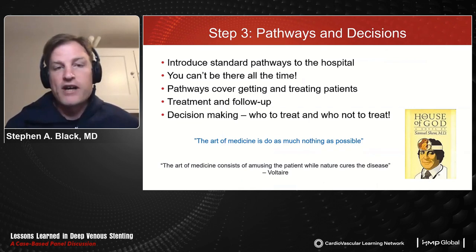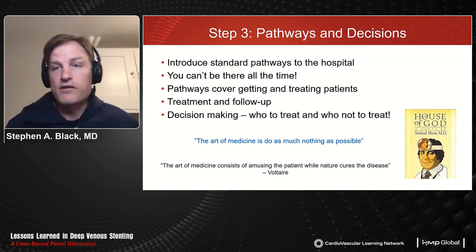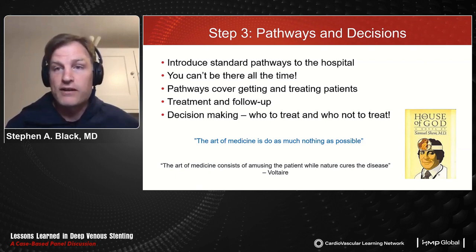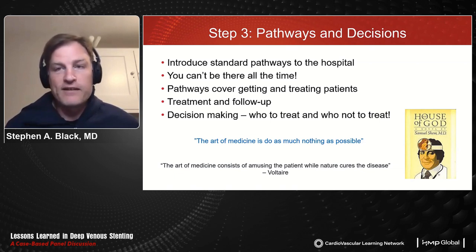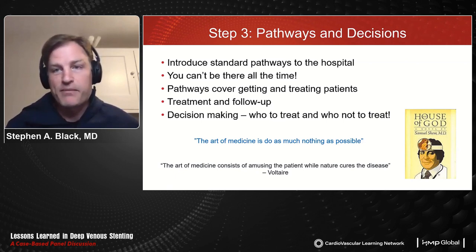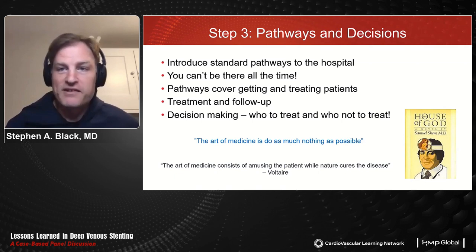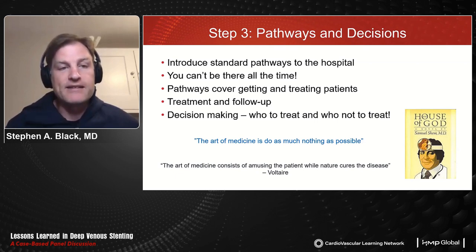The third element is changing your pathways and decision-making. Standard pathways should be introduced so patients reach you not only for treatment but also for follow-up and management. Early in venous stenting, practitioners would place a stent in acute or chronic DVT patients and not see them again. Unlike arterial disease, a blocked venous stent doesn't immediately cause ischemia — the patient just doesn't feel any different, returns months later, and by then the stent is blocked and difficult to salvage.